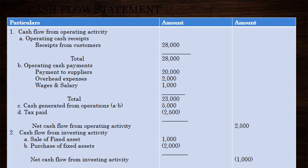The payment to suppliers is $20,000. Operating expenses are on the other side — if you want to pay the suppliers, overhead expenses, wages and salary, add $23,000. Then cash generated from operations: A and B less. If you add $23,000, then we will pay $23,000.